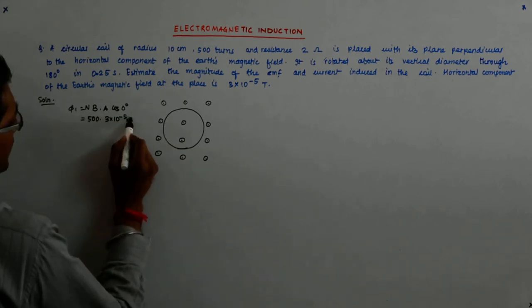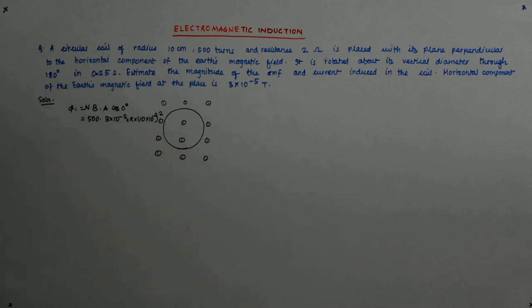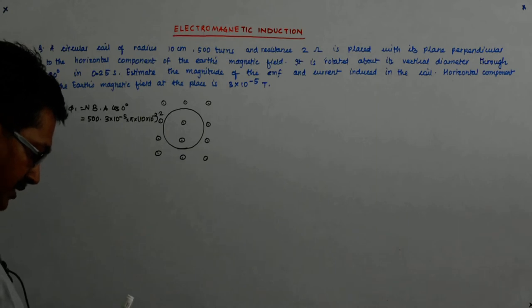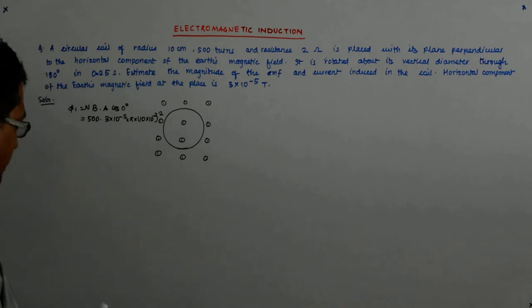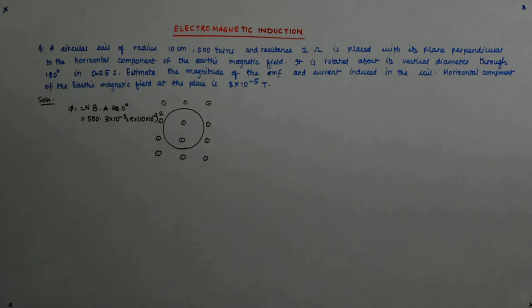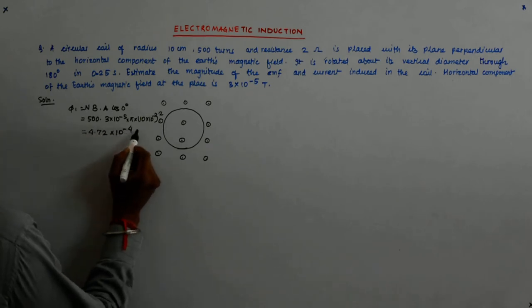So that is π into 10 into 10^-2 squared. Using calculator: 500 into 3 into 10^-5 into π into 0.01. That is equal to 4.72 × 10^-4, so that becomes 4.72 × 10^-4 Weber.